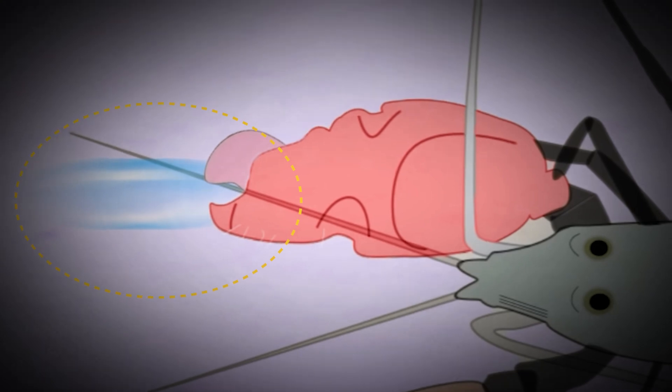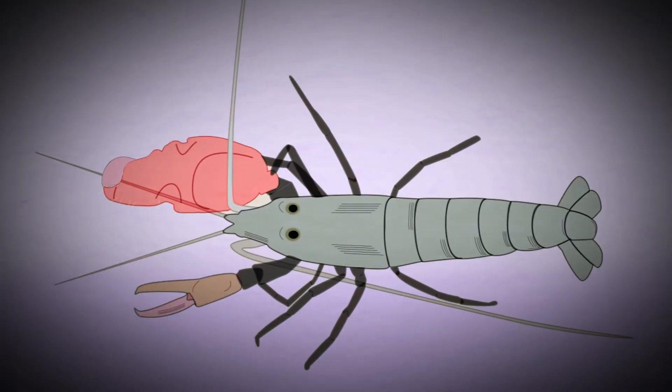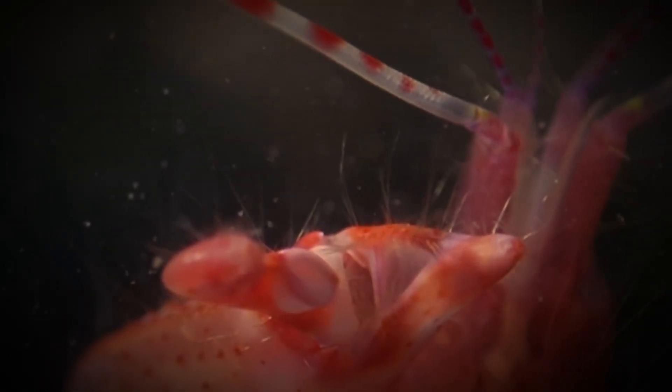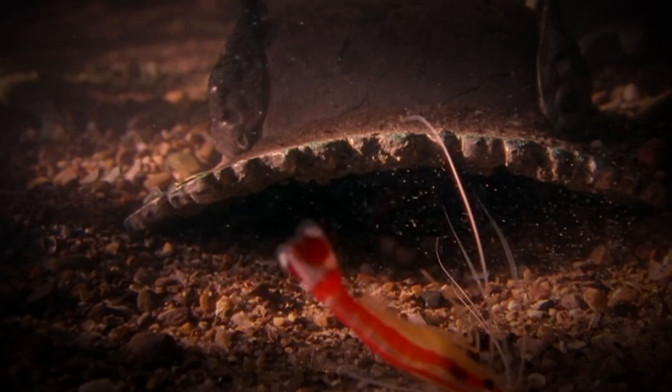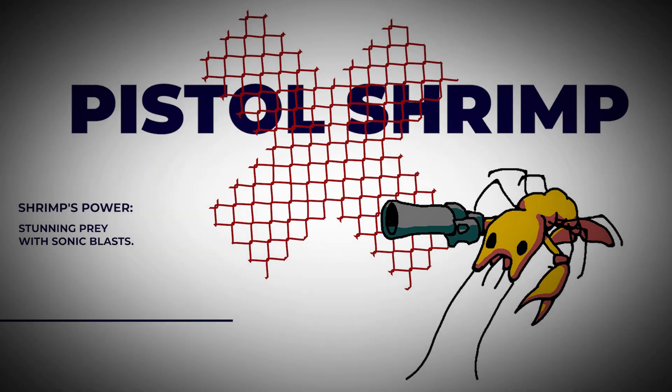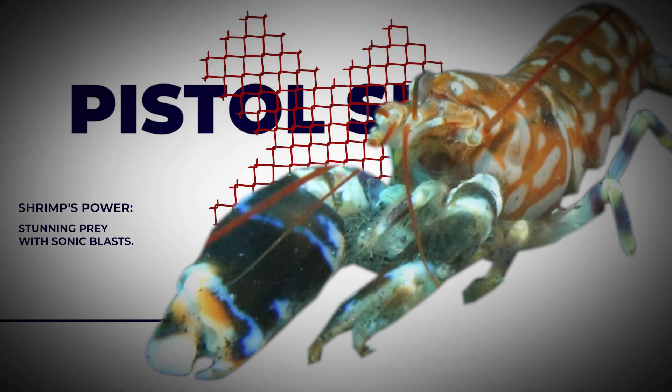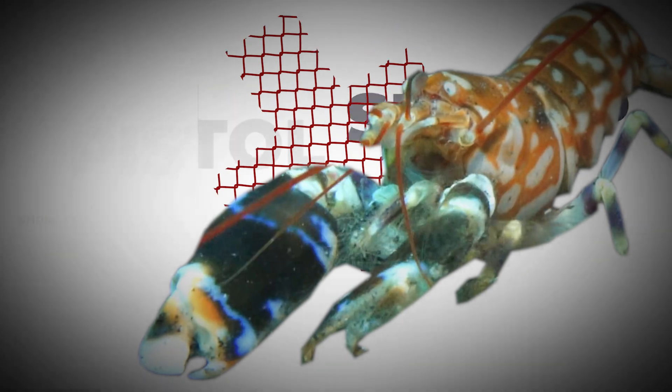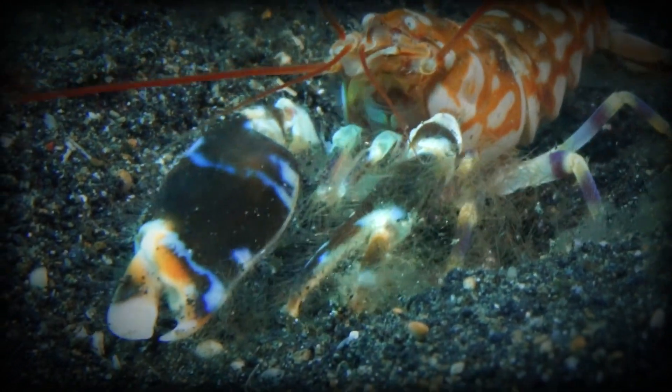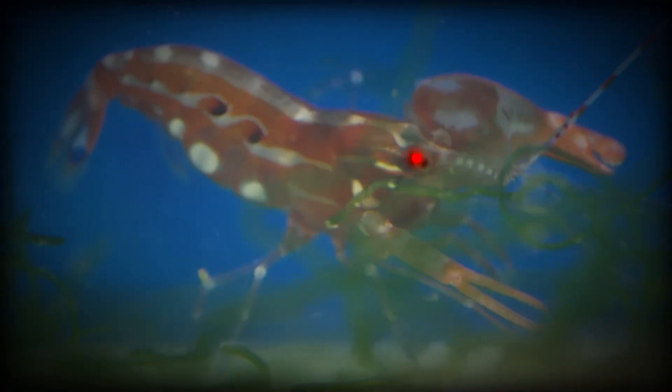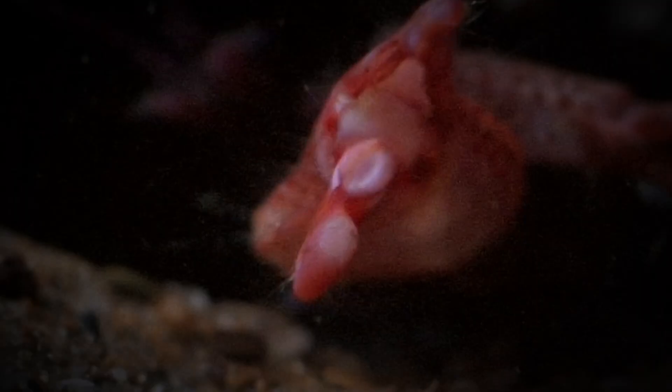This creates a high-speed jet of water that shoots out of the claw and creates a shockwave strong enough to stun or even kill nearby prey. But wait, there's more. The pistol shrimp has also developed an incredible sense of aim to go along with its powerful punch. It can sense the location of prey using special sensors on its body, then aim its claw with incredible accuracy to deliver a deadly blow.